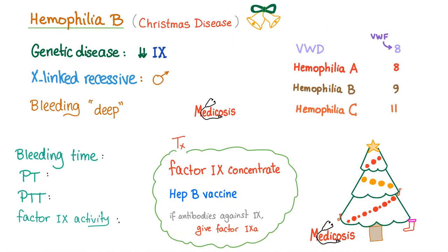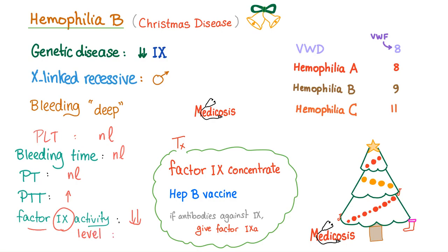Here is hemophilia B in a nutshell. It is a genetic disease with decreased factor IX activity, which could be due to deficiency or an inhibitor — differentiated by mixing study. It is X-linked recessive, so it primarily affects males. Clinically: deep bleeding, joint bleeding, muscle hematomas, retroperitoneal and intracranial bleeding. Bleeding time is normal. Platelet count is normal. PT is normal. PTT is prolonged because the problem is in the intrinsic pathway. Factor IX activity is always low. Factor IX level depends: low if deficiency, normal if inhibitor. Mixing study: if normalized, it was deficiency; if not normalized, it's an inhibitor.